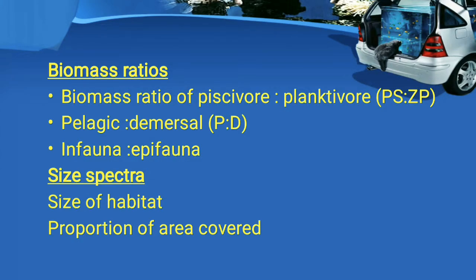Biomass ratio indicators include P/C ratio, planktivores, pelagic and demersal ratio, and infauna and epifauna ratio. These ratios — P/C ratio, planktivore, pelagic and demersal — both ratios indicate proportional relationships that must be maintained together. The size of the habitat and proportion of area covered are also indicators at the ecosystem level, showing how the ecosystem is doing. All these are assessed by size spectra.